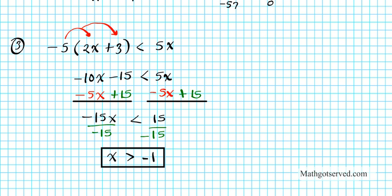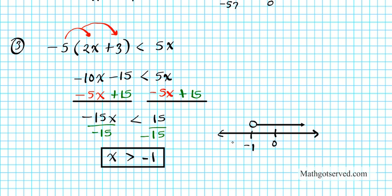Let's go ahead and sketch the graph of this inequality. x is greater than negative 1. We have a zero, and since we're going negative we go to the left — it's negative 1. We have an open circle, and greater than points to the right. Should I fill in the circle? Absolutely not, because you don't have a line here, so you just leave it open and it goes to the right. There goes the graph of your solution set.